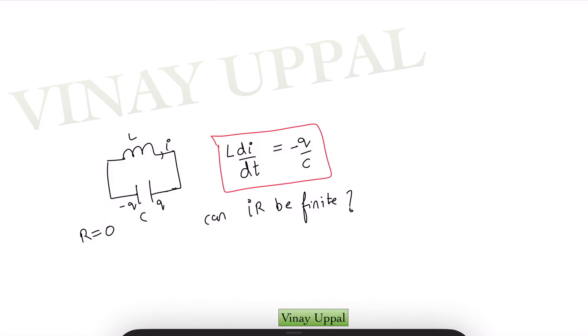You must have solved L C oscillations with this equation and this equation is correct. Even though R is zero, in the previous situation we could not neglect I R. Here why are we saying I R is zero and why can it not be a finite value? It's not a difficult question if you think in terms of energy. But do post your thoughts in the comment section and have a look.